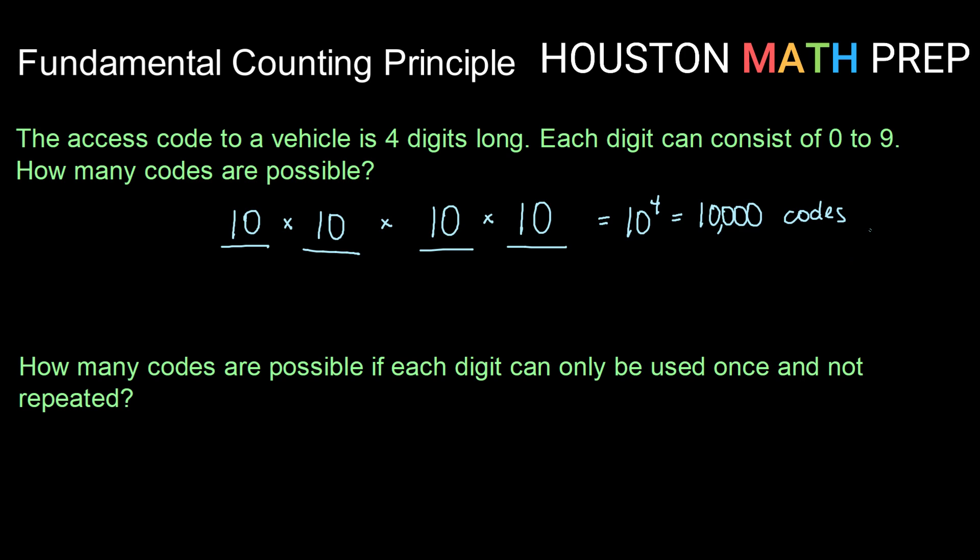Now, that is if every single digit can be from 0 to 9. But what if we put some restrictions on that? Can we still use the fundamental counting principle to figure this out? How many codes are possible if each digit can only be used once and not repeated? Meaning that a code like 1, 1, 3, 5 would not be allowed because the ones are repeated.